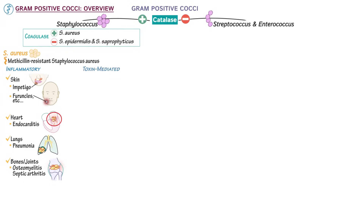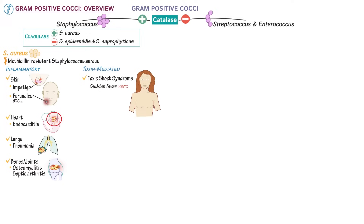Staphylococcus aureus can cause toxic shock syndrome. Formerly associated with tampon use, septic shock now occurs at least as often, if not more often, in non-menstruating individuals. Toxic shock syndrome is characterized by acute onset of fever, GI upset, sore throat, and diffuse erythroderma. Desquamation occurs when the skin begins to peel and flake away.